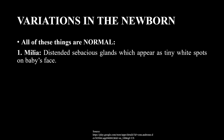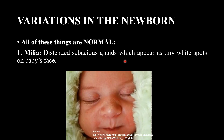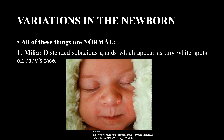First, let's talk about milia. Milia are distended sebaceous glands which appear as tiny white spots on baby's face - white color spots that can be seen on the baby's nose area. It goes away on its own within a few weeks. Within a few weeks it disappears on its own.